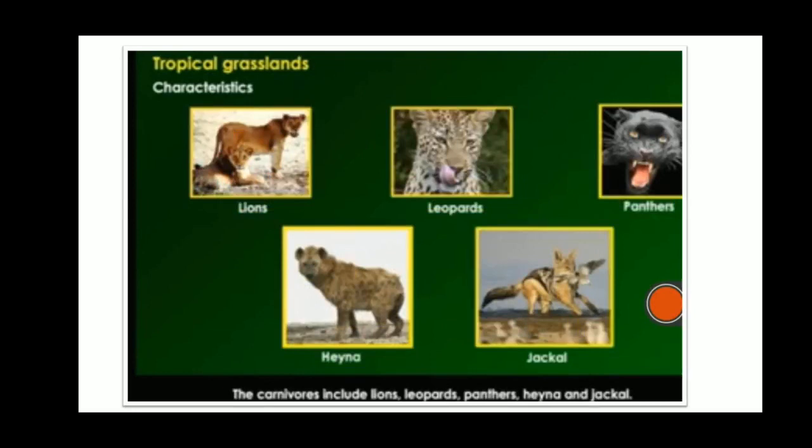Now we will learn about the carnivore animals of tropical grasslands. They are lions, leopards, panther, hyena and jackal. These are the wildlife we find in tropical grasslands.